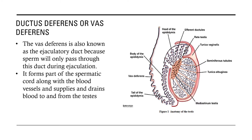Next is the ductus deferens or vas deferens. The vas deferens is also known as the ejaculatory duct because sperm will only pass through this duct during ejaculation. When it is time for ejaculation in the boar, sperm passes through the vas deferens. It also forms part of the spermatic cord along with blood vessels that supply and drain blood to and from the testes.